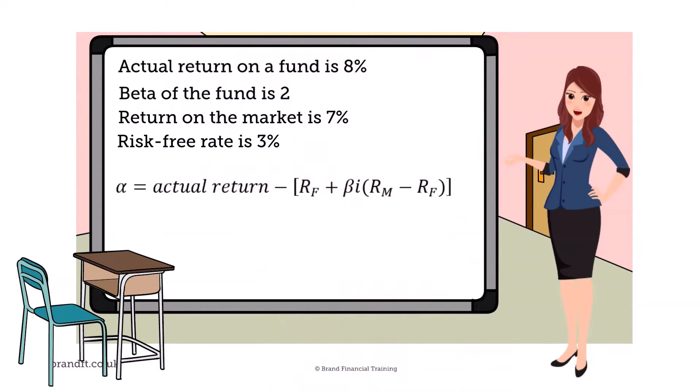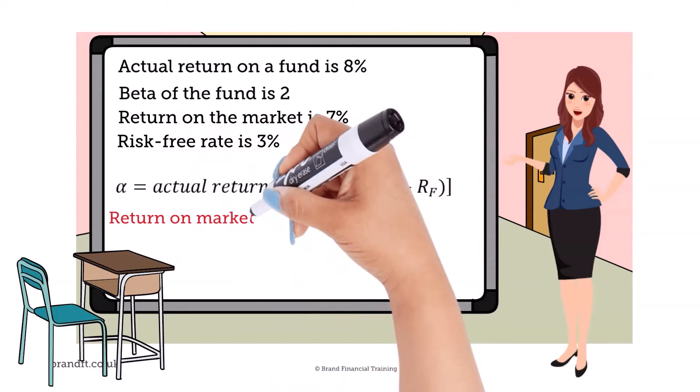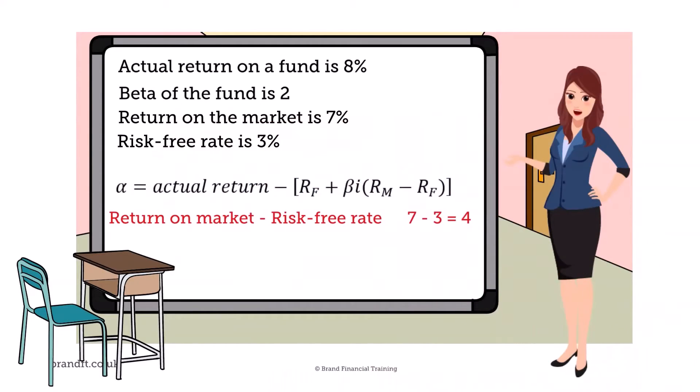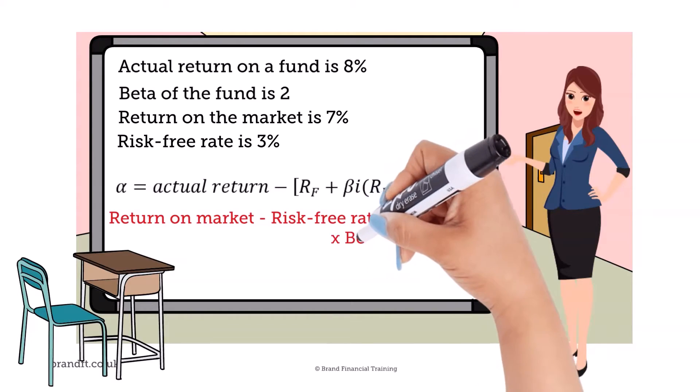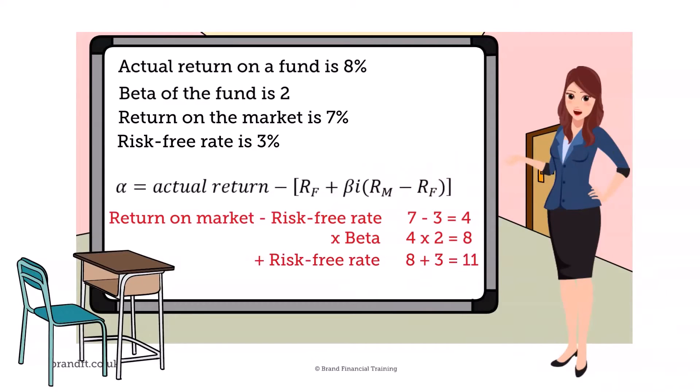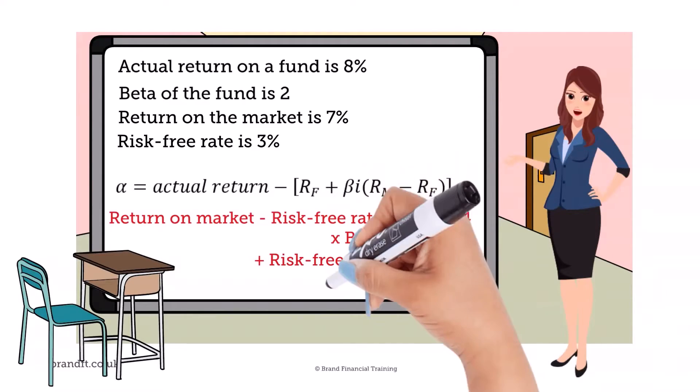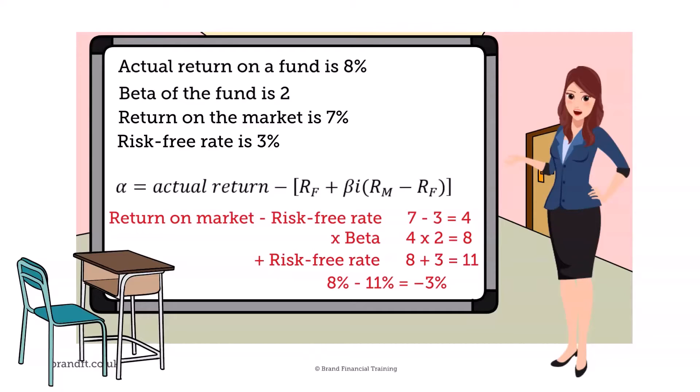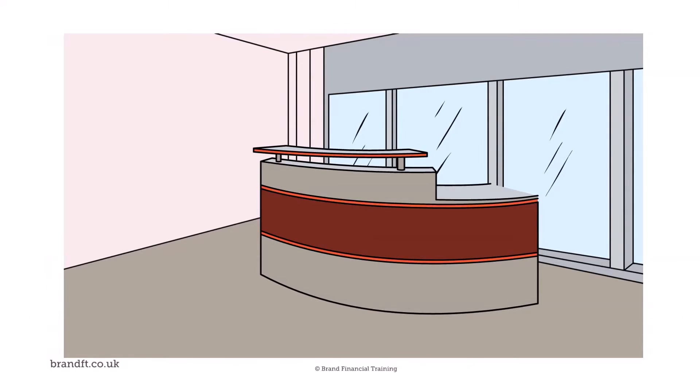To establish alpha, we start by working out the inner bracketed figures first. So 7 minus 3 equals 4. Multiply 4 by 2 (the beta), which equals 8. Then add 3 (the risk-free rate), which gives us 11. So the actual return of 8% minus 11% gives an alpha of -3%. This is a negative alpha.